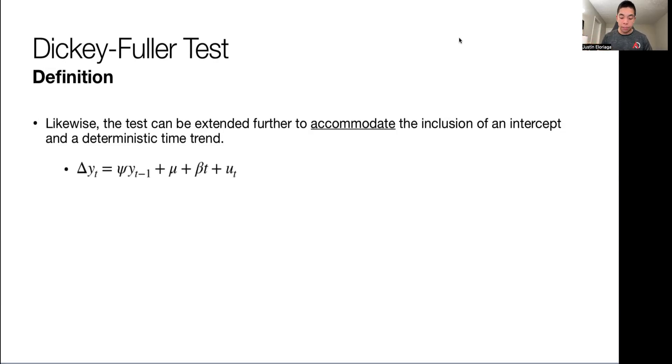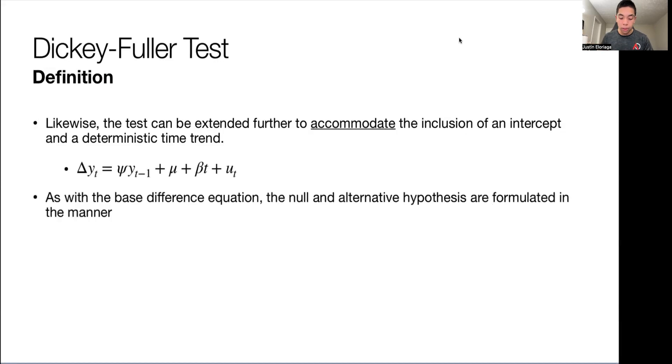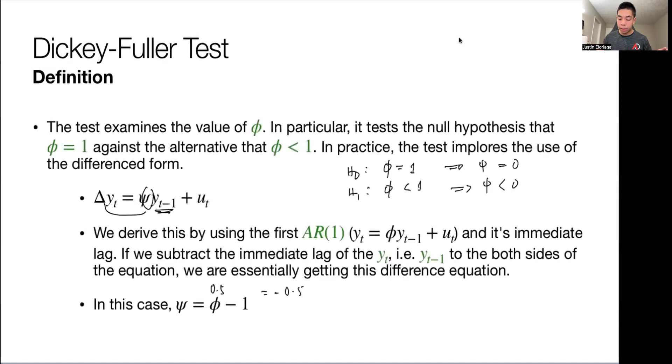Say we have this particular model with both of them. We use that difference form. And as with the base difference equation, the null and alternative hypotheses are determined in this particular manner. If that is equal to 0 and if that is not equal to 0, basically. Just to be more general about it as a two-tailed test. So what we're going to do is generalize it as equal to 0 and not equal to 0. That's what we have as our null and alternative hypothesis for the base Dickey-Fuller test.